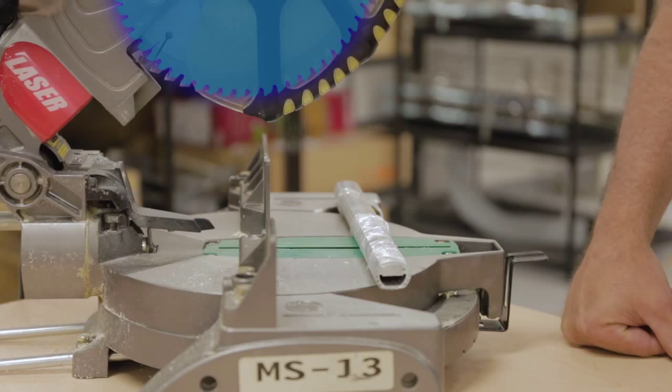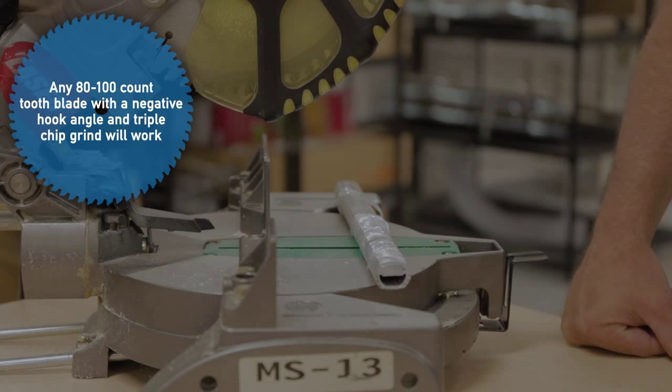First, you will need to cut your extrusion to desired length. A miter saw with a high tooth count blade specifically for aluminum is the best option.